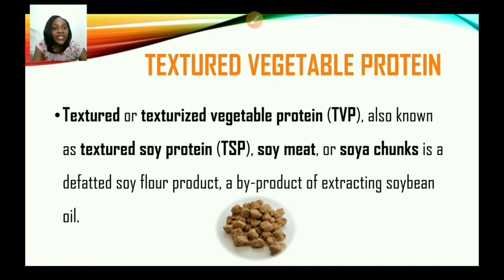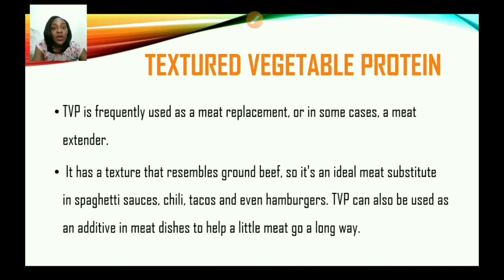Textured or texturized vegetable protein, TVP, also known as textured soy protein, soy meat, or soy chunks, is a defatted soy flour product — a by-product of extracting soybean oil. This product is made as a by-product of extracting oil from soybeans. TVP is frequently used as a meat replacement or in some cases a meat extender.